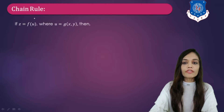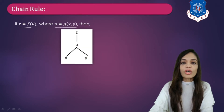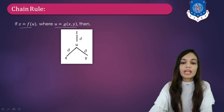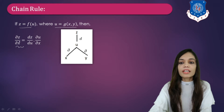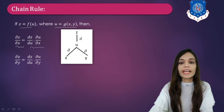That is the chain rule. If Z is a function of U, where U is a function G of X comma Y, let us make a tree diagram. Z is a function of U, and U is a function of X and Y. If we need to find ∂Z/∂X, the formula will be dZ/dU into ∂U/∂X. Similarly, if we want to find ∂Z/∂Y, the formula will be dZ/dU into ∂U/∂Y.